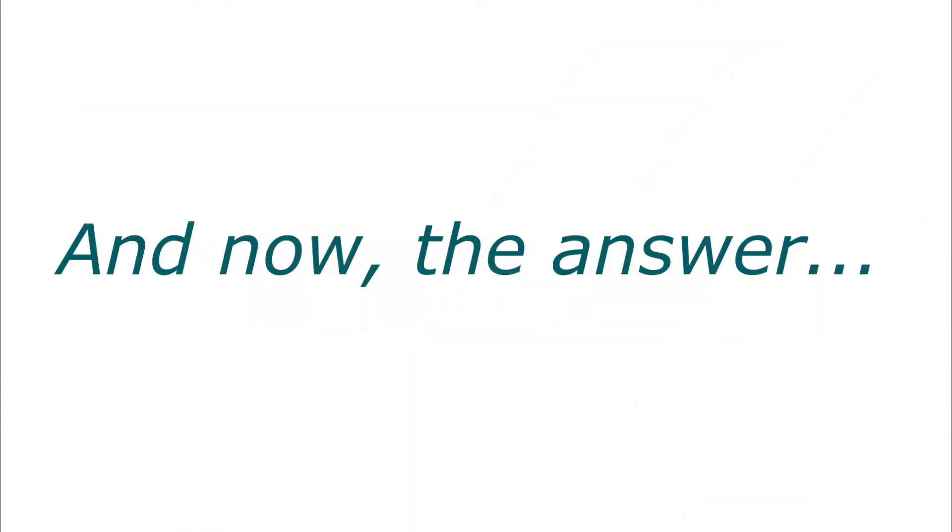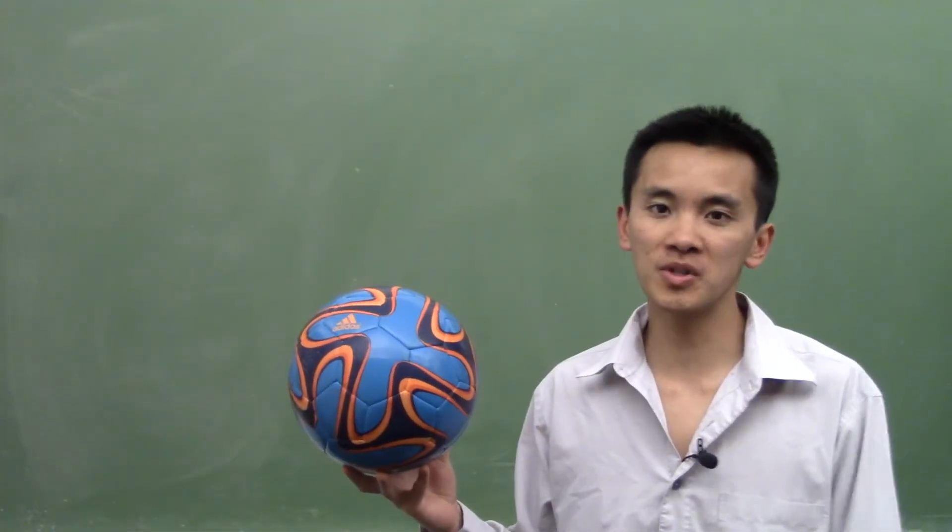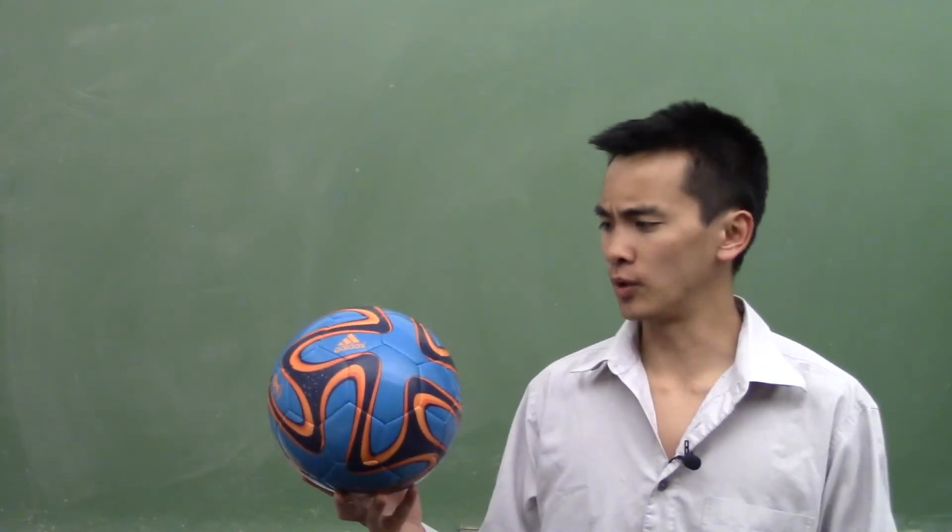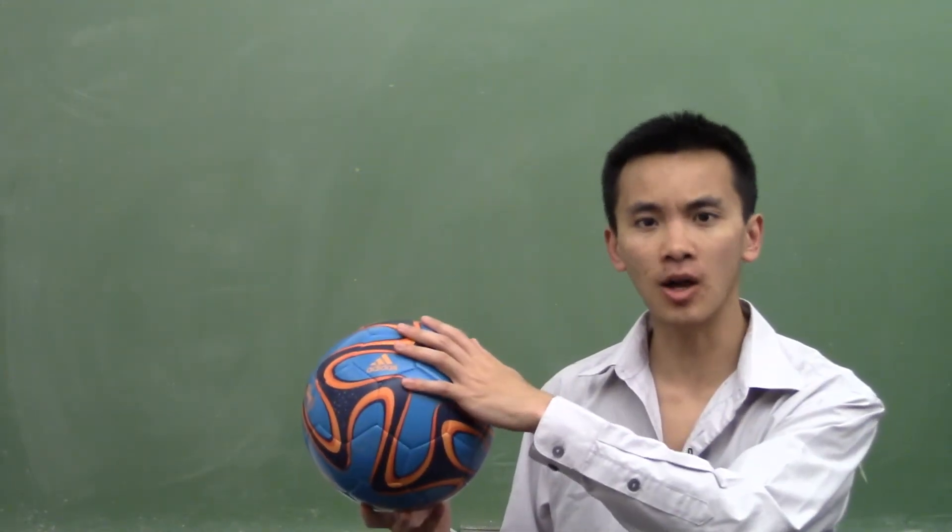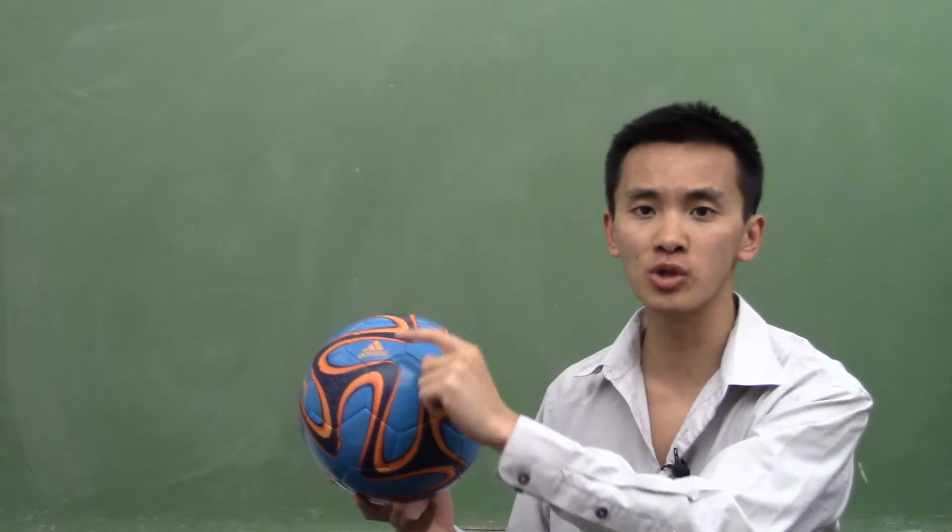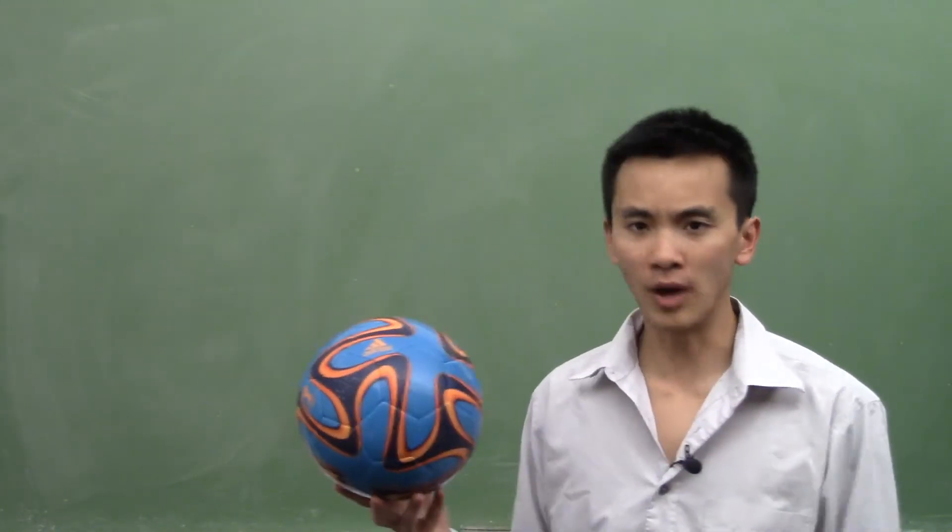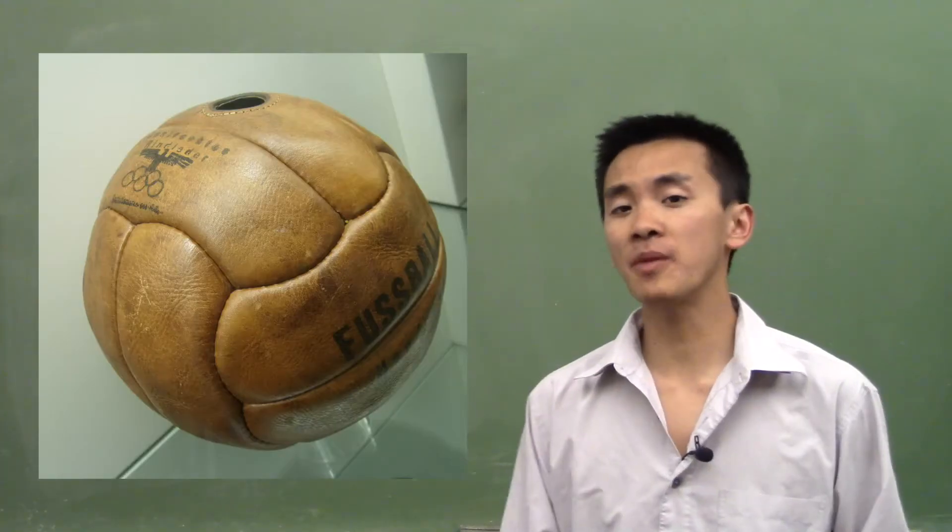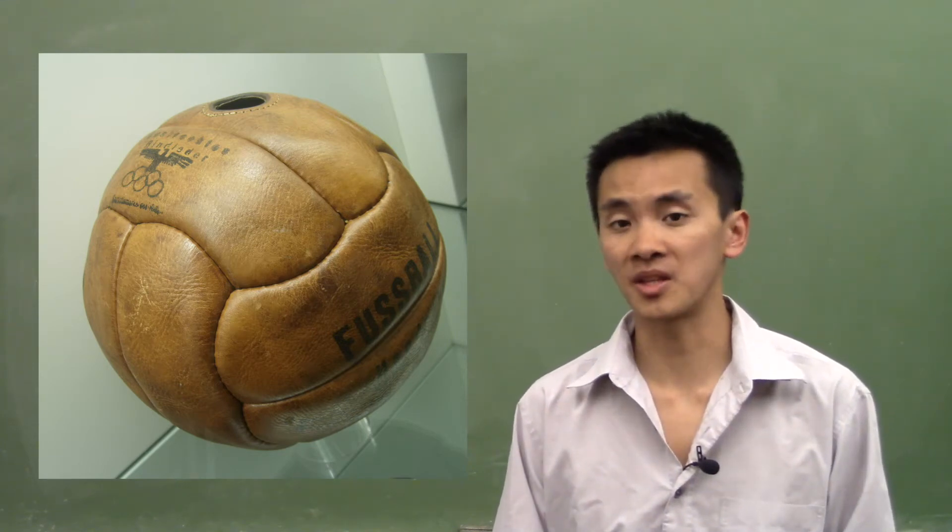And now the answer. Back in those days, balls were made of leather. So you had these flat sheets of leather, and you had to sew them together to make up a round ball. The shape they got back then was not made of pentagons and hexagons.